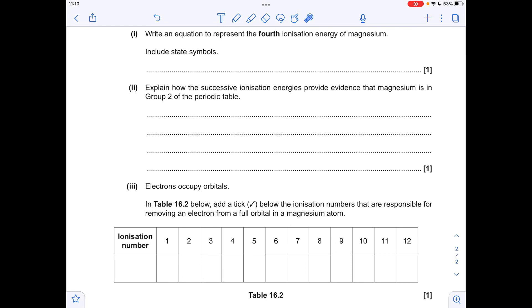Moving on to part B, we've got to write the equation that represents the fourth ionization energy of magnesium. So that's going from the three plus ion to the four plus ion. There's the electron that's been removed. And the state symbol for any ionization energy equation is gas. So just make sure that your state symbol looks like a G.